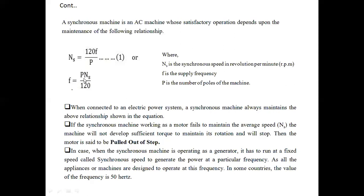From the formula Ns = 120f/p: Ns is synchronous speed in RPM, f is frequency in hertz, and p is the number of poles. The synchronous motor will have synchronous speed generated by the three-phase winding. In the case of a generator, the speed provided by the prime mover to the armature must equal synchronous speed, because the generator receives mechanical power at that speed — a speed that corresponds to the required frequency and number of poles.